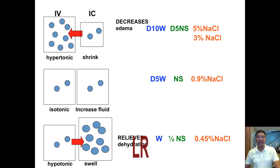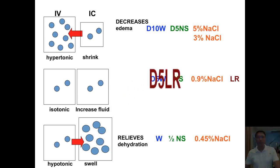What about LR? LR is isotonic. And D5LR, hypertonic.